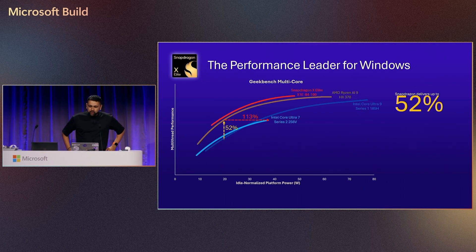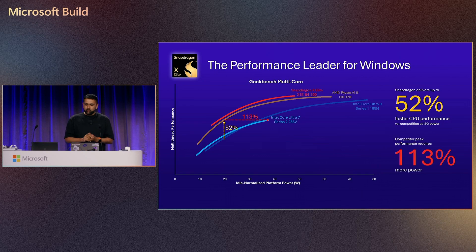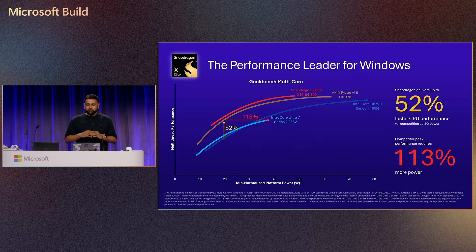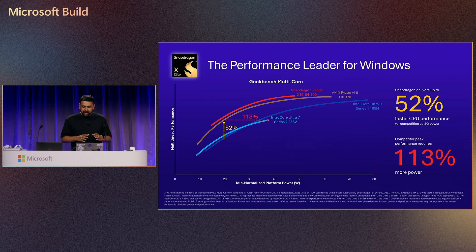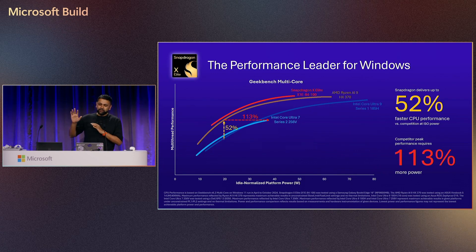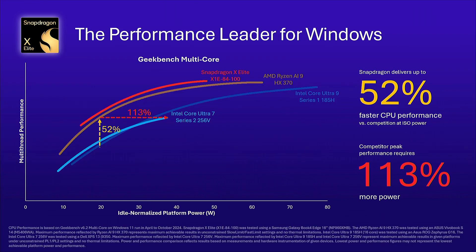To start off, let's see what matters most to developers: performance. Snapdragon X-Elite is the performance leader for Windows. Looking at the graph, Snapdragon delivers up to 52% faster CPU performance when compared to competition. And not just that — our competition requires double the power to achieve exactly the same kind of performance. So what we're talking about is not just benchmarks; it's about real-world efficiency.